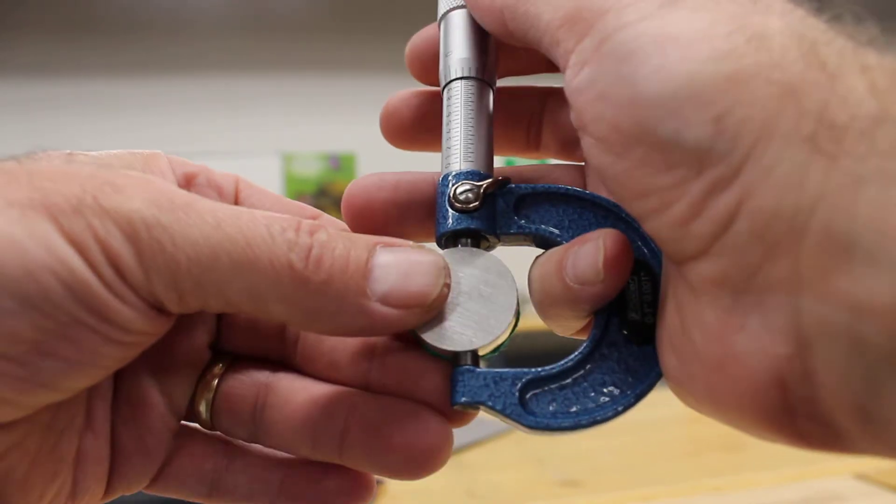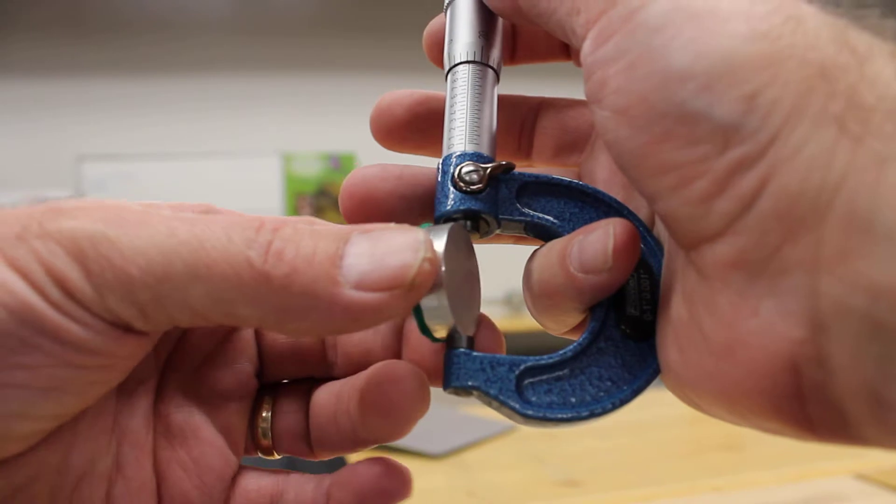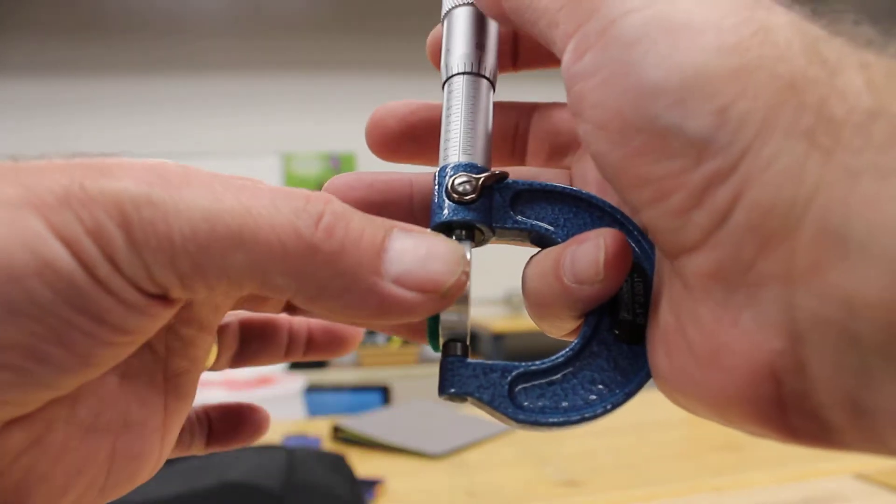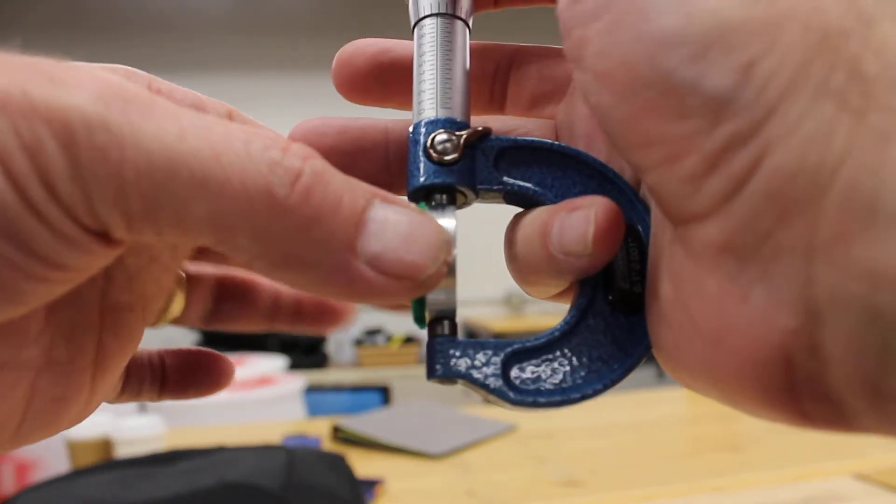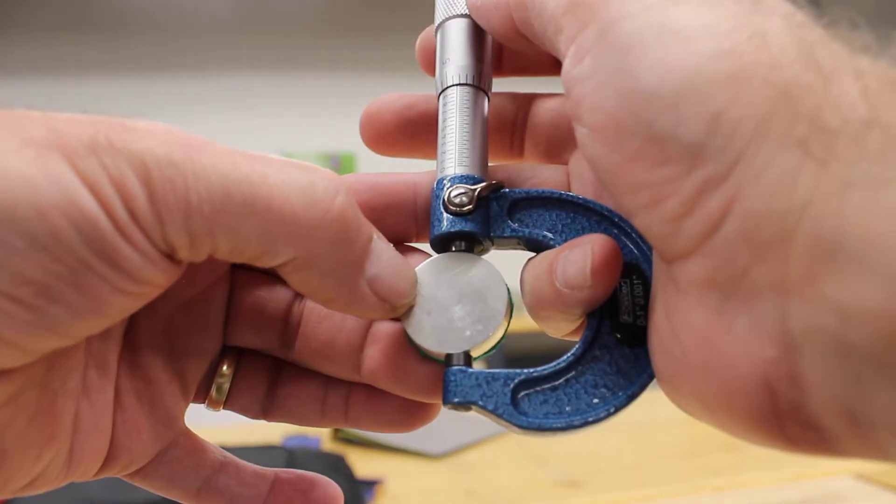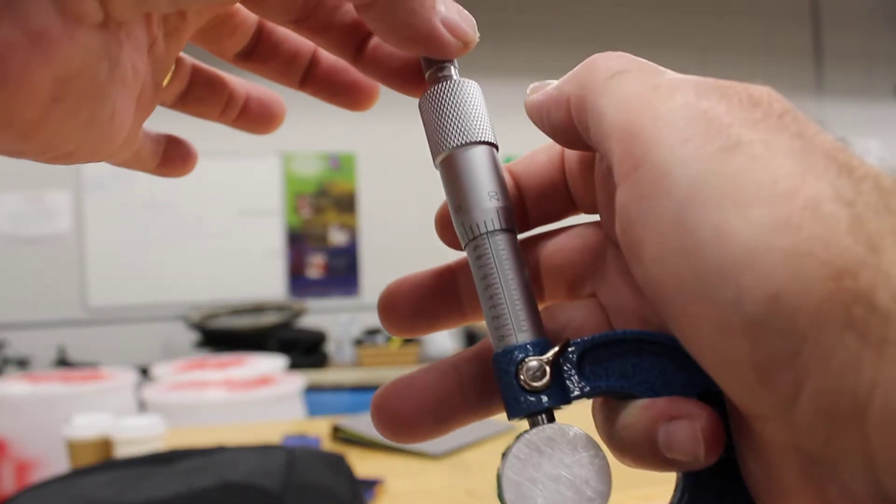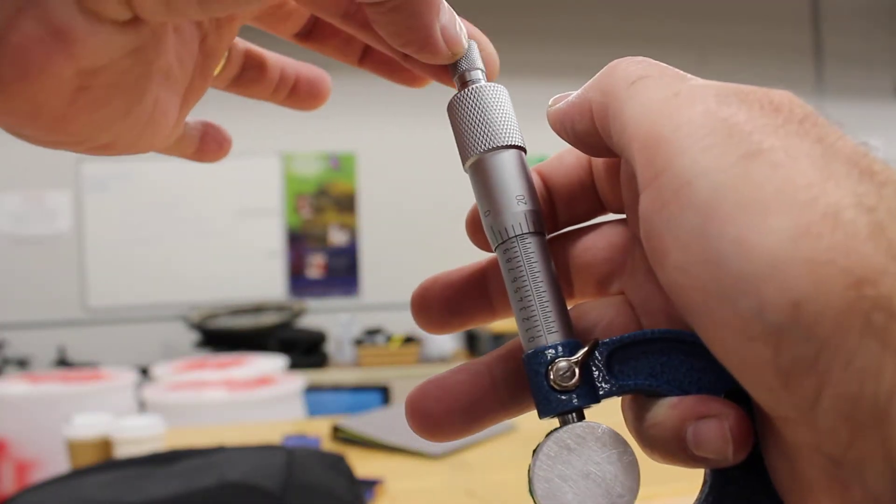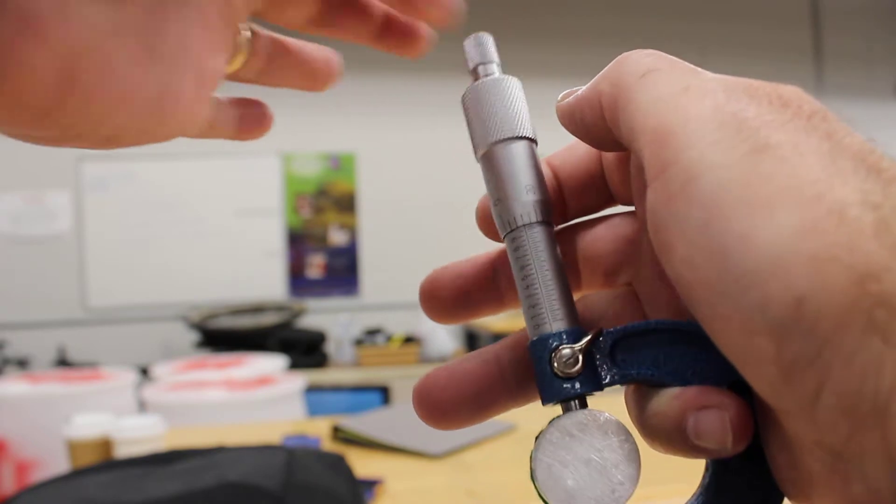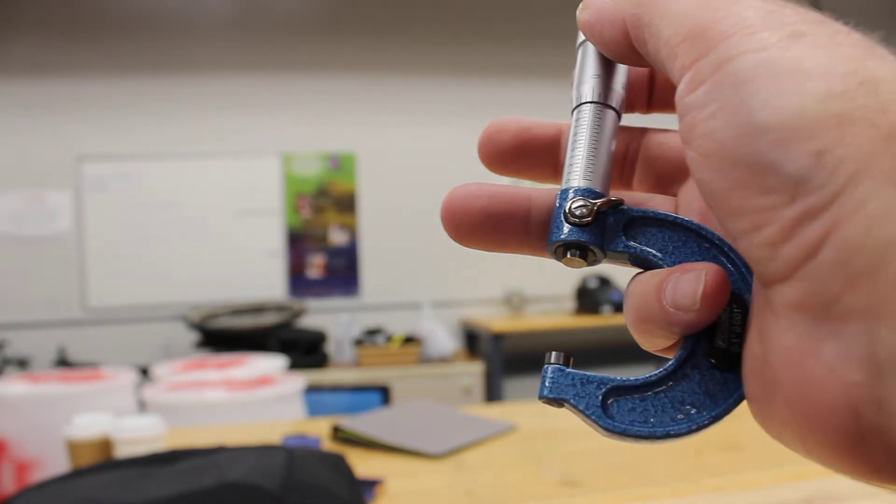We're going to close it nice and easy. Don't want to jam it shut; you just want to do it till it stops. Look at it from the side, make sure it's straight, make sure it's not cocked this way. Get it a little snug and make sure that ratchet clicks. That's good, that's right where it's supposed to be. When you're done, open it up, take the part out.